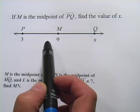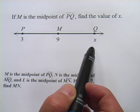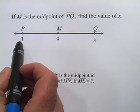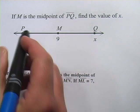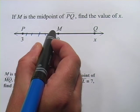The first one says if M is the midpoint of PQ, find the value of x. So P is 3, M is 9, these are like coordinates on a number line. You'd have 4, 5, 6, 7, 8 in there.